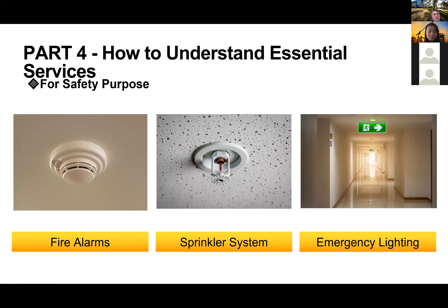For safety purposes: fire alarms give notice of smoke or fire, sprinkler systems, and emergency lighting. All these are must-haves in any type of building except residential. Residential only requires a fire alarm, but sprinkler systems are required in commercial buildings — class two to nine. Emergency lighting is also required in class two to nine.